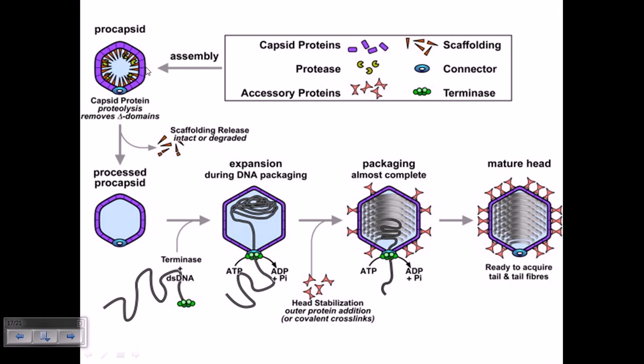core. Once they produce this arrangement, it's called a procapsid, which has a small pole-like structure called a connector. This connector is important as the capsid proteins are proteolyzed and remove the delta domains. The scaffold proteins must